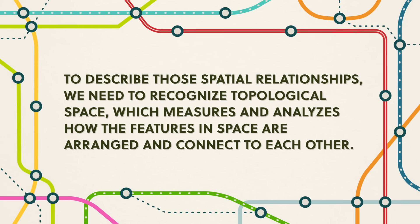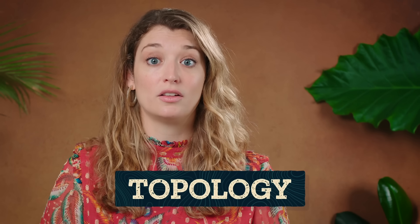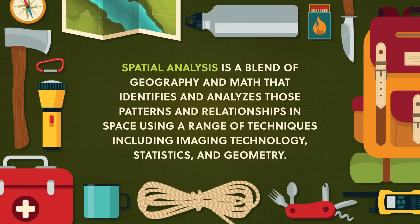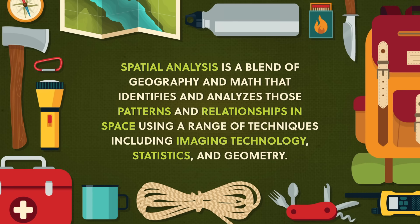While it's great to know where things are, as geographers we want to go beyond that. Once we know where things are in space, we can understand how they're related — their spatial relationships. In fact, humans are hardwired to think about spatial relationships and how we're related to the space container around us. To describe those spatial relationships, we need to recognize topological space, which measures and analyzes how the features in space are arranged and connect to each other. This term comes from topology, which refers to how the pieces of something are related or arranged. Spatial analysis is a blend of geography and math that identifies and analyzes those patterns and relationships in space using a range of techniques, including imaging technology, statistics, and geometry.